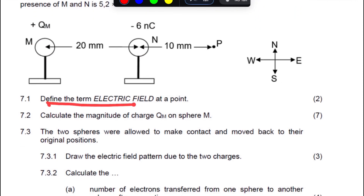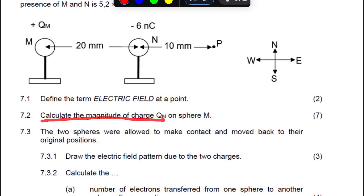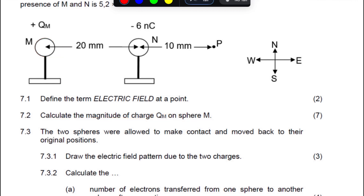Define an electric field at a point: an electric field at a point is the electrostatic force experienced per unit positive charge placed at that point. We need to calculate the magnitude of charge M, and we know it is positive.